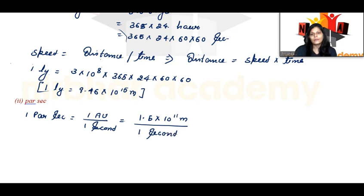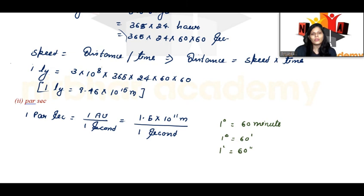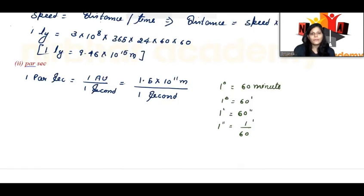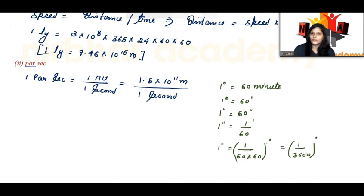Now, 1 degree is equal to 60 arc-minutes, and 1 arc-minute is equal to 60 arc-seconds. A double dot means arc-second and a single dot means arc-minute. So 1 arc-second equals 1 by 3600 degrees. Converting to radians: 1 degree equals pi by 180 radians.